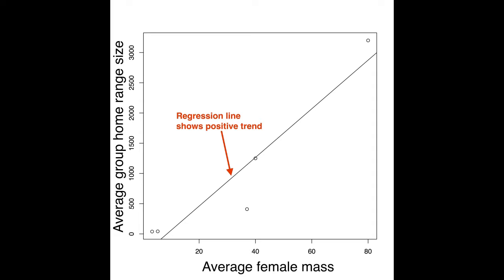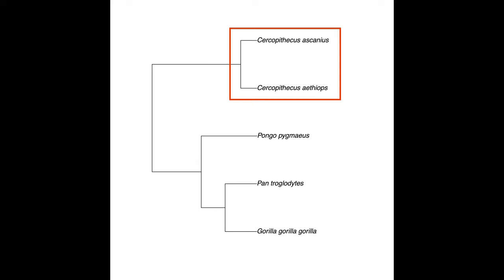This can lead us to all sorts of hypotheses about what it is about primates that makes female size so important to the size of primate territories — does it have something to do with their social structures? But not so fast. Let's look at the phylogeny. Notice that these two species of Old World Monkeys are so closely related that they are in the same genus. So these two species are more like one data point — of course they will be similar in a lot of ways because they are so genetically similar. And yet we are counting this one data point twice.